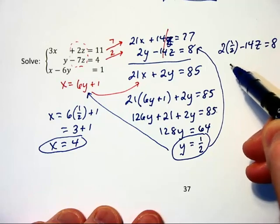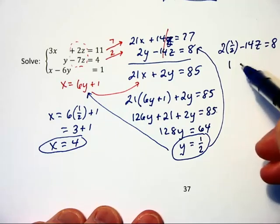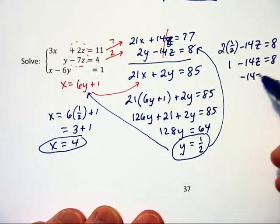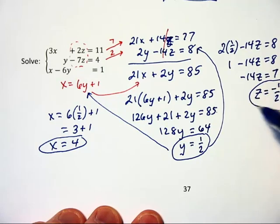2 times 1 half minus 14z is equal to 8. Well, 2 times 1 half is 1 minus 14z is equal to 8. Subtracting 1 on each side leaves me with negative 14z is equal to 7, and therefore, z, you can see, will be negative 1 half.